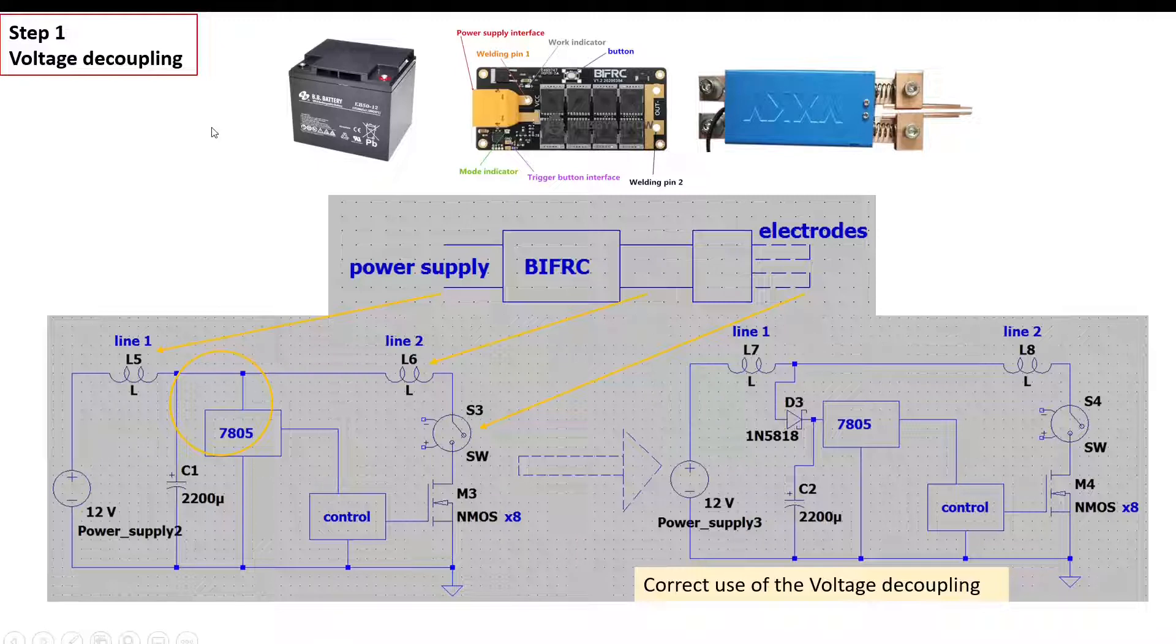The first one, so in this slide you see our board, the soldering pin I bought with the two electrodes. In general, many people use a simple battery because it can deliver a very high amount of current with a voltage suitable for this board around 12 volts. In the first step, we will fix the voltage decoupling.